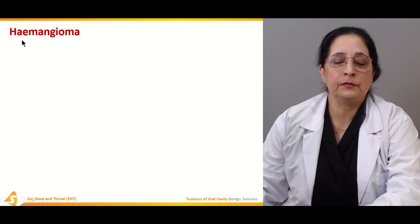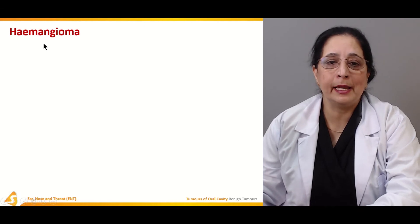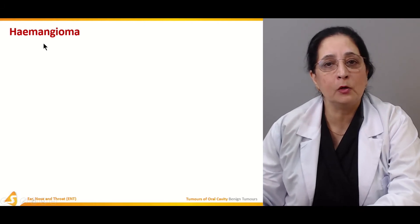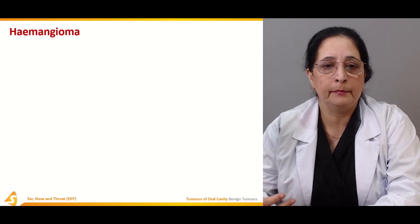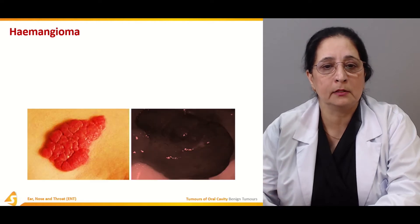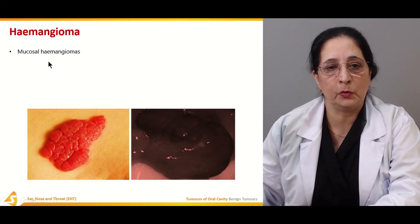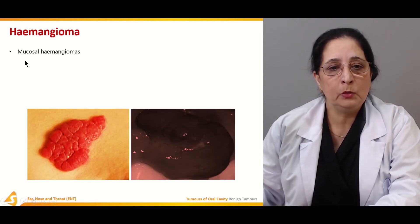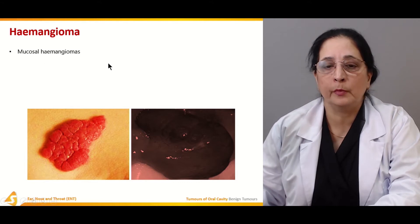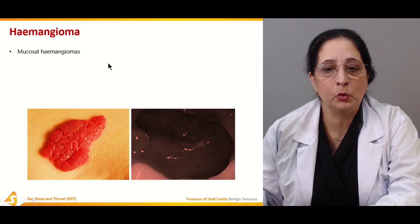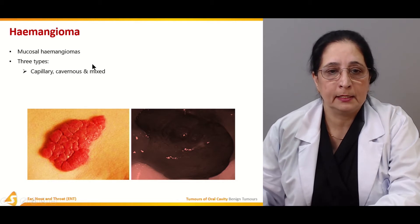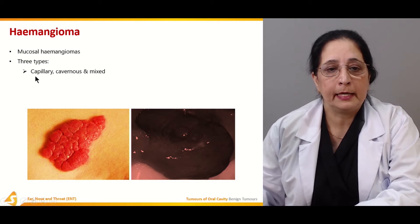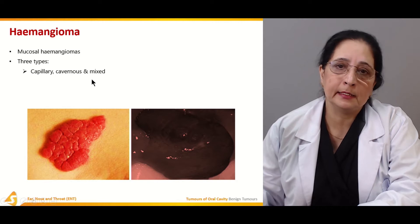Hemangioma: 'hema' is for the blood, 'angio' is for the blood vessel, so it's the tumor of the blood vessels or arteries. Mucosal hemangiomas are present on the mucosal surface. There are three types: capillary, cavernous, and mixed.